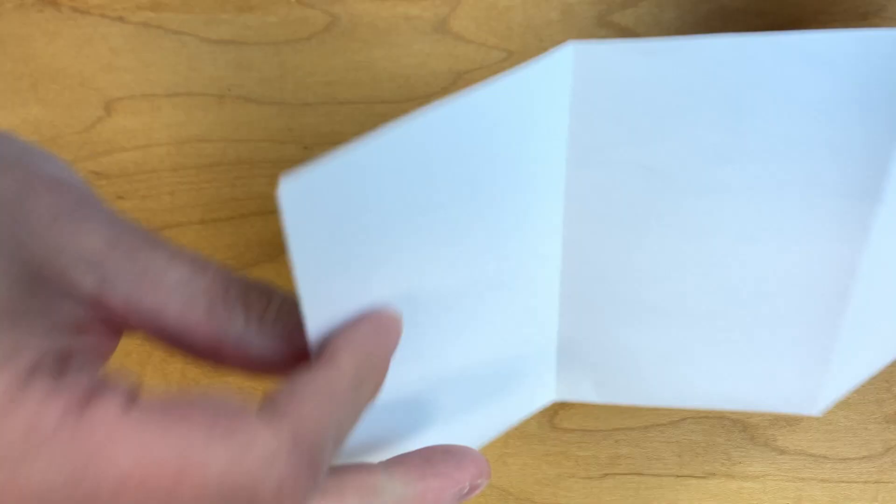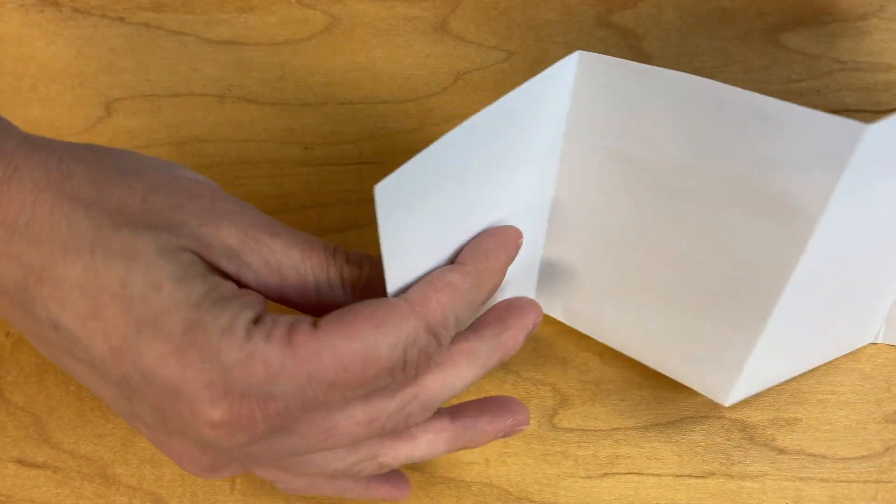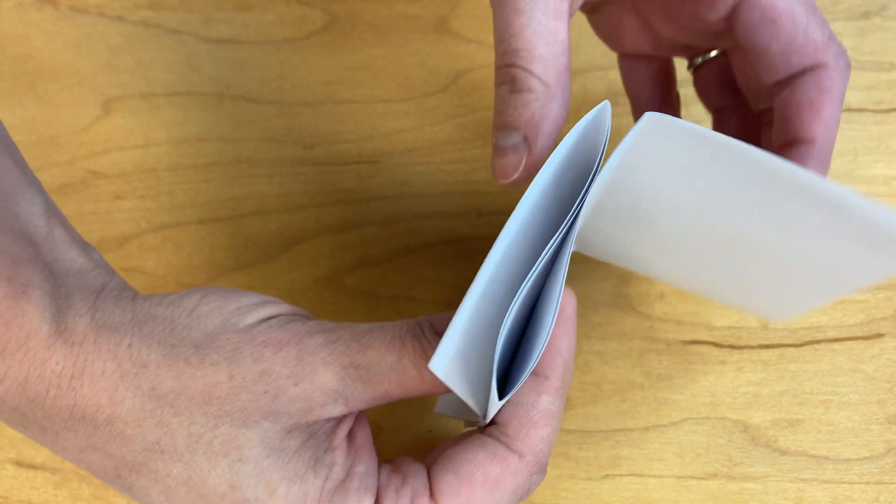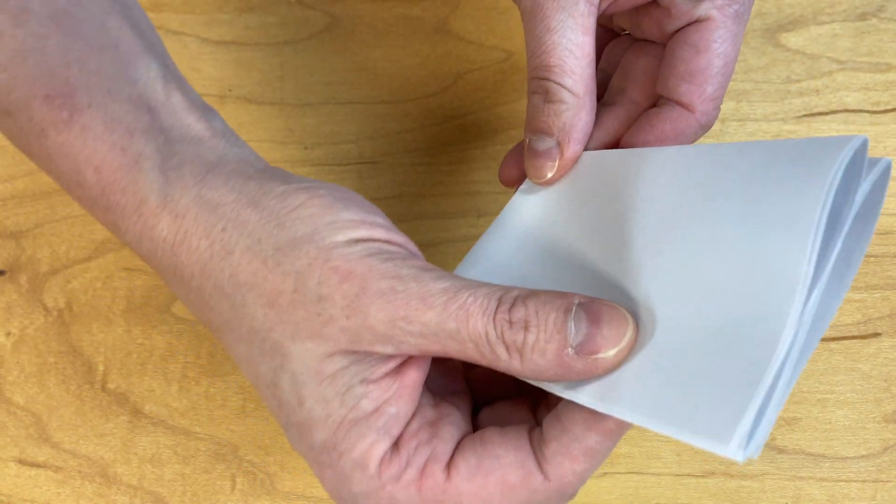I'll show you one more time because that's tricky. It's kind of like a zigzag. So here they are, I folded them and I'm going to go fold this way, fold back, fold that way, just folding it off the sides.